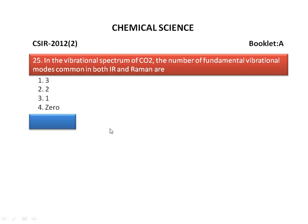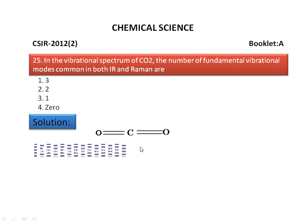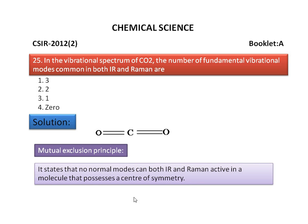Now we discuss the solution for the above question. Carbon dioxide is a linear molecule. It has a center of symmetry. The mutual exclusion principle says that no normal modes can be both IR and Raman active in a molecule that possesses a center of symmetry.